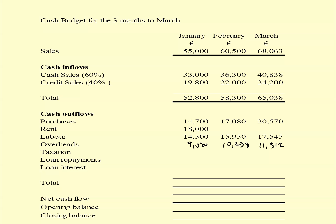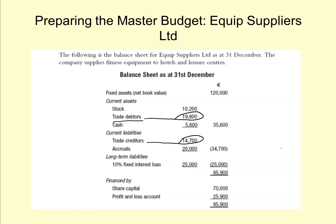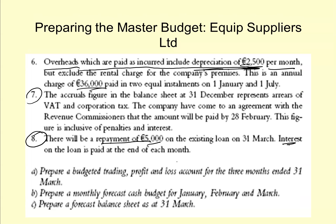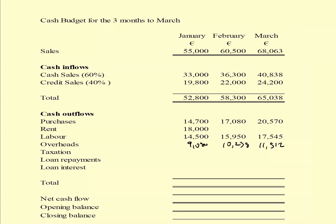The taxation figure is the accruals balance from the balance sheet, which is 20,000. Note number seven tells us the accruals figure at 31st December represents arrears of VAT and corporation tax, to be paid by 28th February. So we put 20,000 in the February column.